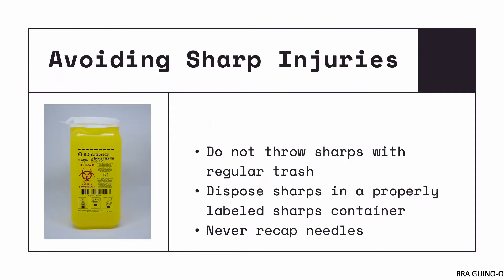In order to avoid sharp injuries, we can practice the following precautions. First and most important, do not throw sharps away with the regular trash, as waste disposal personnel might not know there are needles in the trash and could get finger pricks. Next, dispose of sharps in a properly labeled sharps container. The sharps container must be puncture proof, properly labeled with the word 'sharps,' have the biohazard symbol, have a cover to prevent spillage, and ideally not be made of fragile materials like glass.